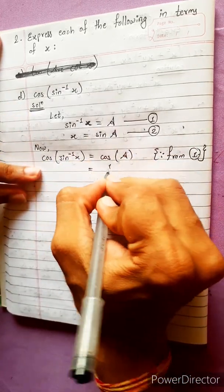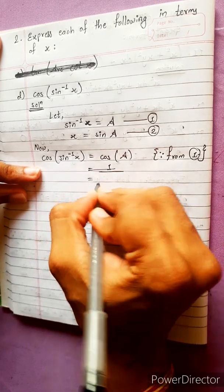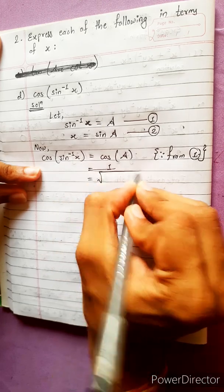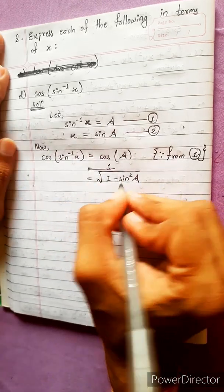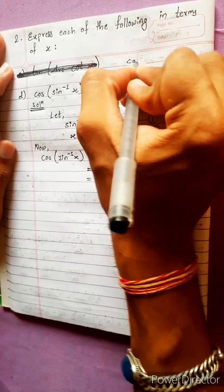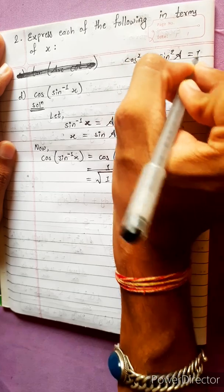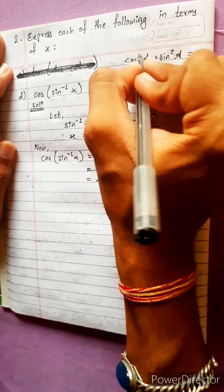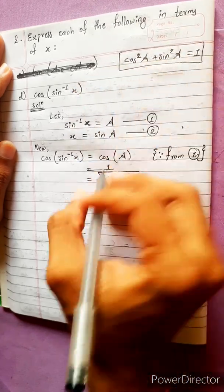And cos A means how much? Cos A means on the root, 1 minus sin square A. Do you agree? There is one formula. Cos square A plus sin square A equal to 1. Now, this sin take this side, and on the root, this square will be on the root. According to this formula, we got this.